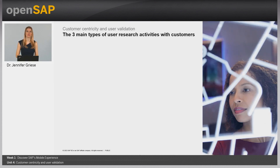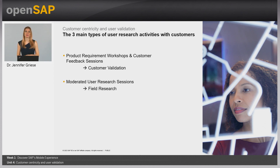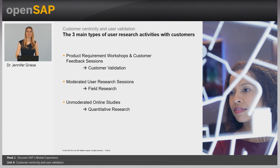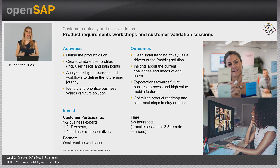Let's break it down into the three main types of user research activities we'd like to do with you. First, there are product requirement and customer feedback sessions — customer validation sessions. Then, there is moderated user research, ideally field research. And then there is quantitative research in the form of unmoderated online studies, which are especially easy and quick to take part in. Ideally, we like to do customer workshops in person — we can come to you or you can come to us. However, if in-person isn't feasible, remote is always an option. Ideally you bring both IT experts and actual end users, whether power users or occasional users.